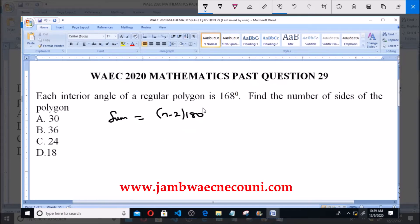If one of the interior angles is 168 degrees, it simply means that the number of sides, n, multiplied by each of these interior angles, 168 degrees, will also give us the sum of the interior angles.